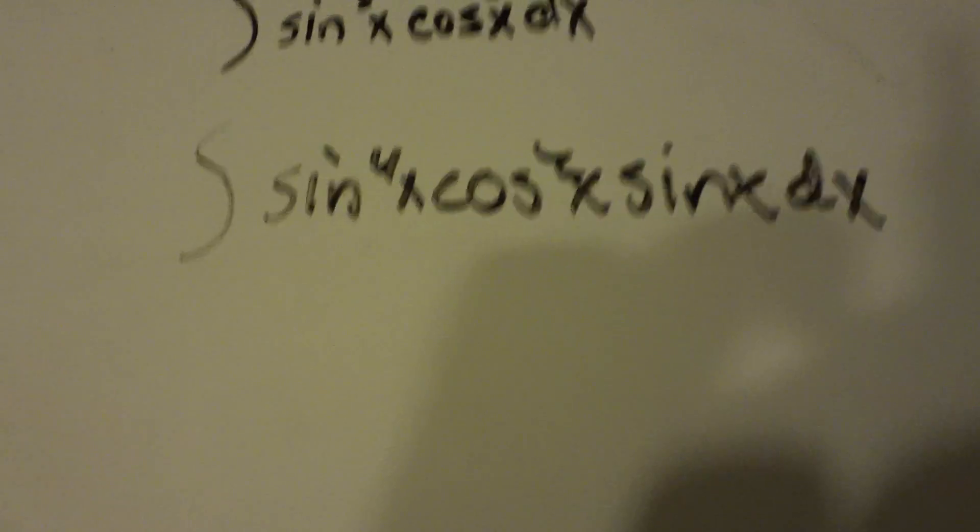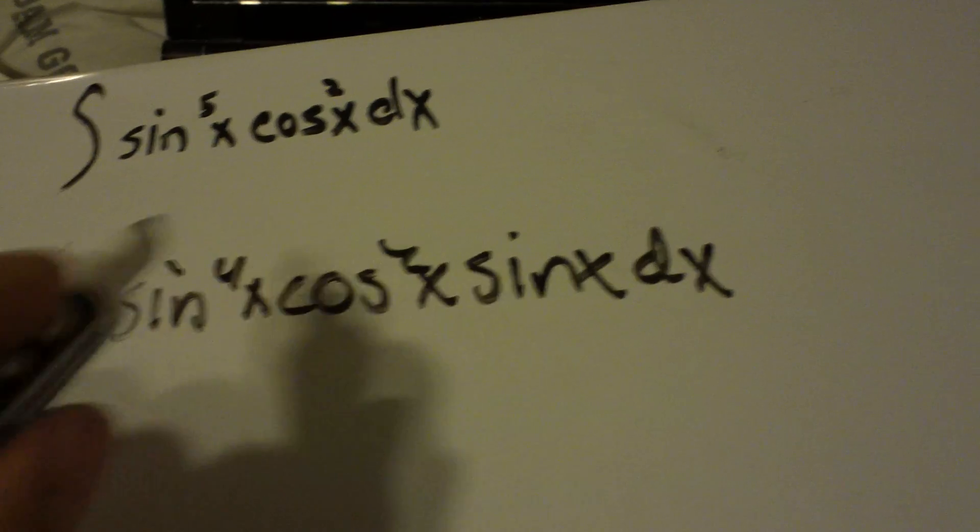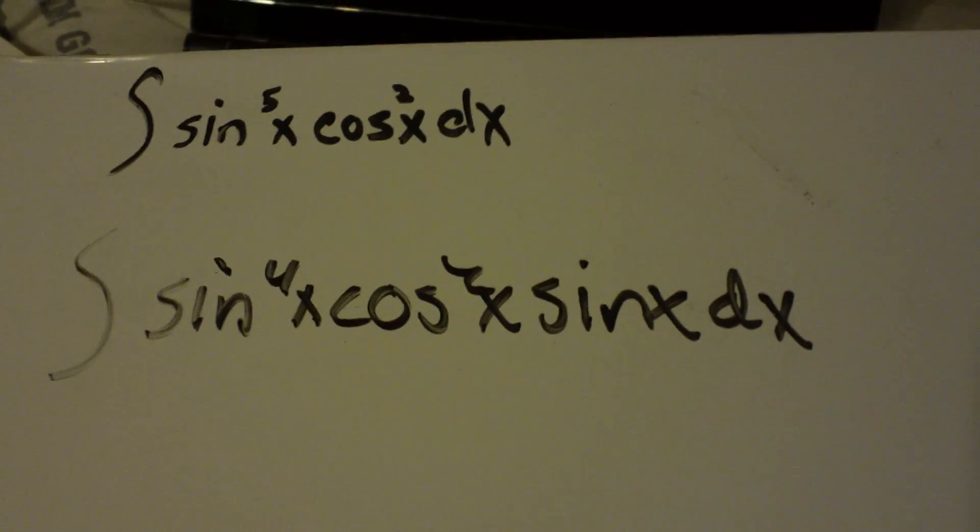So first thing you do is sine to the fourth x cosine squared x sine dx. That's the exact same, if you multiply those two together you get sine to the fifth, so I'm not changing anything, just kind of changing the way it looks.